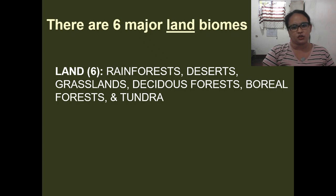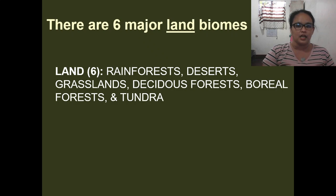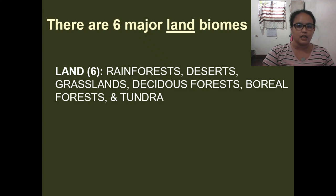There are six major land biomes. First, we have the rainforest, and then we have the deserts, the grasslands, the deciduous forest, the boreal forest, and the tundra.